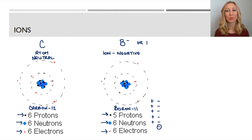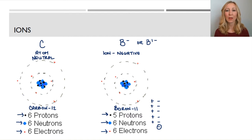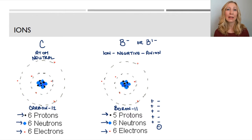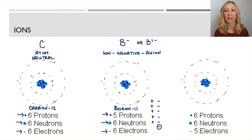We can write 1− but it's more common to just write the negative symbol without the 1, since we assume a single negative charge if no number is given. So we write B⁻. This is an ion with a negative charge, and it has a special name: an anion. A negatively charged ion is called an anion. It became negative because somewhere it had gained 1 electron, going from neutral to gaining 1 electron.